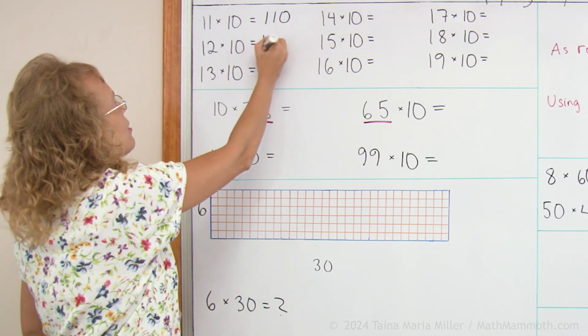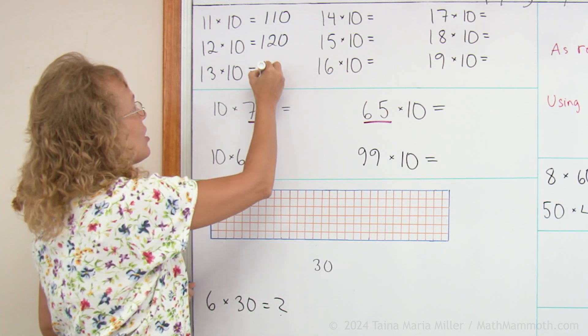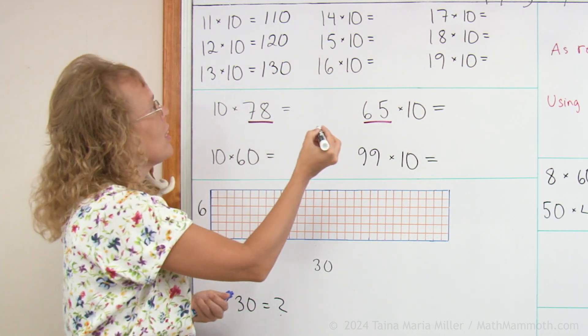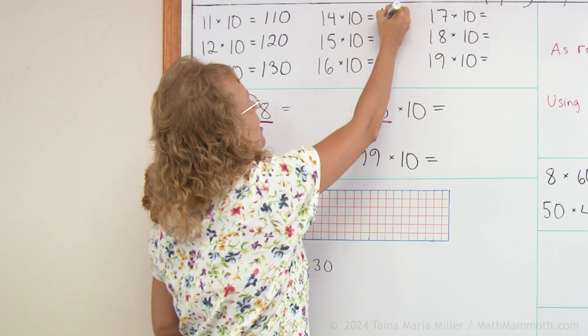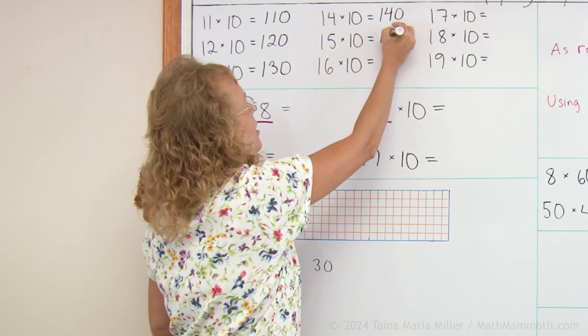12 times 10, 120. 13 times 10 is 110 more, right? So 130 and then over here 140 because it is 110 more than that. Each time you add 10, right?